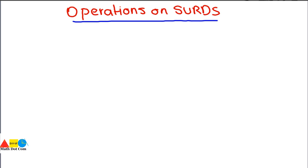Our today's lecture is on the operations on surds. In our previous lecture we discussed the concept of surds — what surds are, different examples of surds, and how to identify whether a given number is a surd or not. Today we will see how you can add or subtract surds, what rules are required for that, and how you can multiply and divide surds.